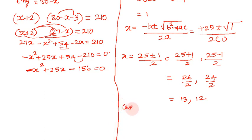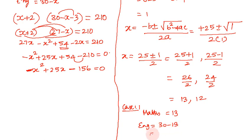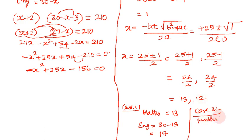There are 2 cases. Case 1: math mark x is 13, so English mark is 30 minus 13 equals 17. Case 2: math mark x is 12, so English mark is 30 minus 12 equals 18. Therefore the answers are: math mark 13 and English mark 17, or math mark 12 and English mark 18.